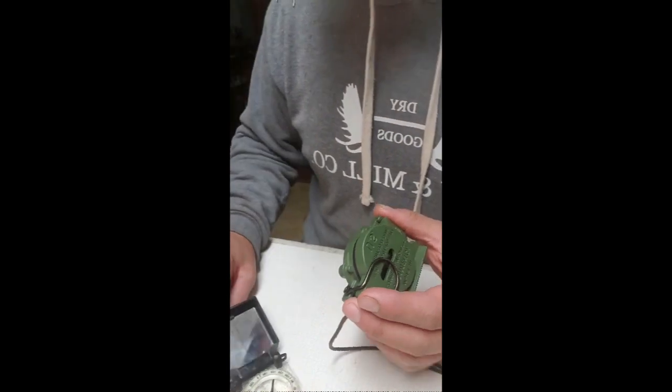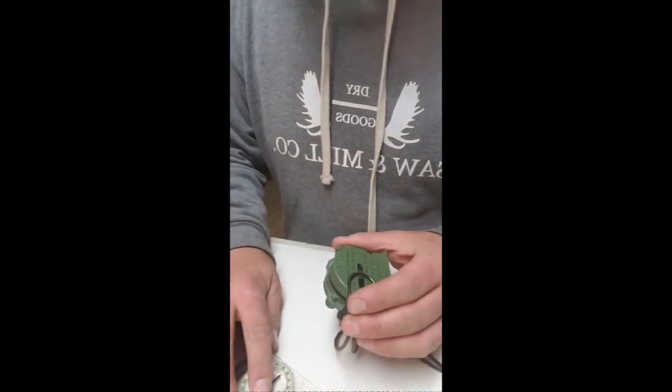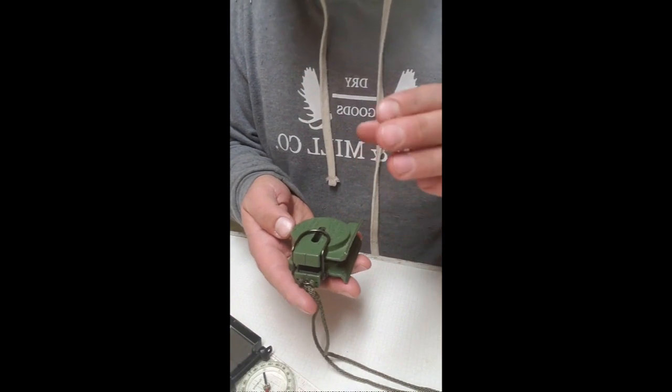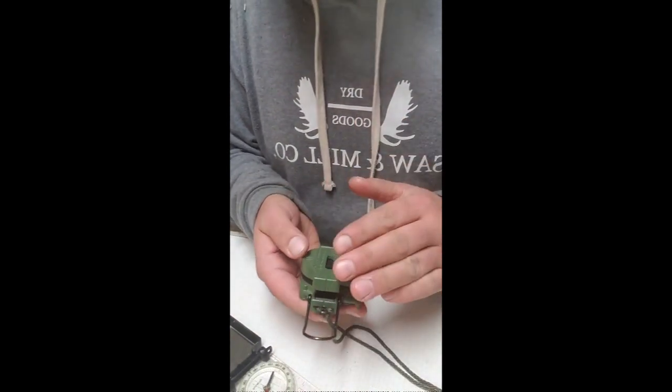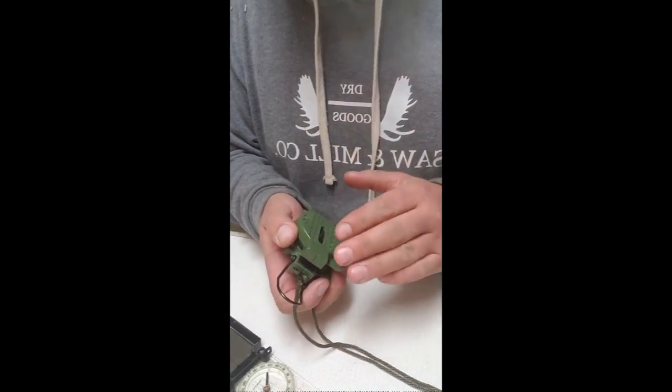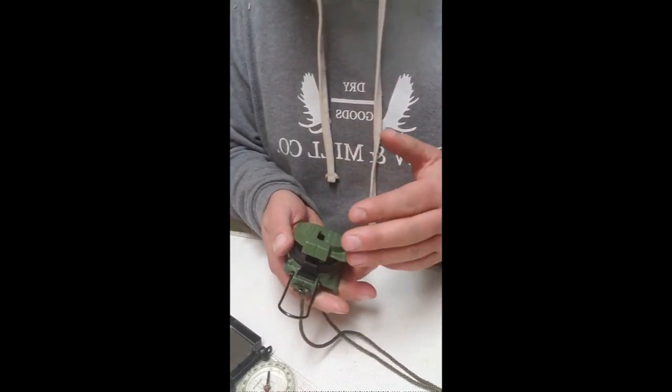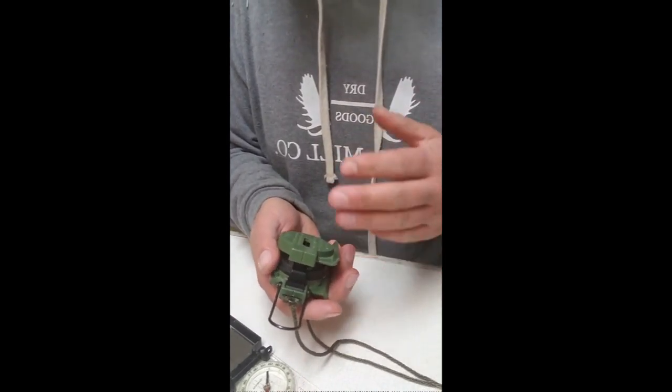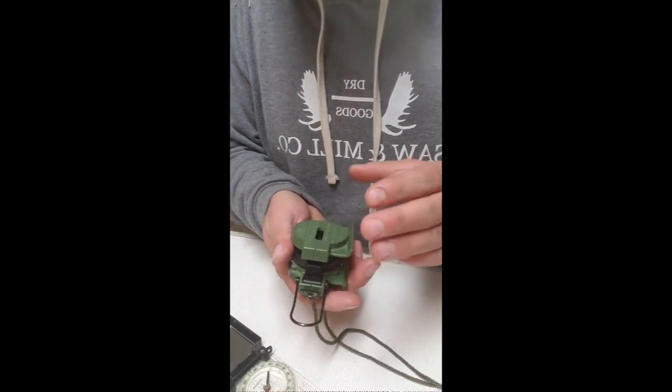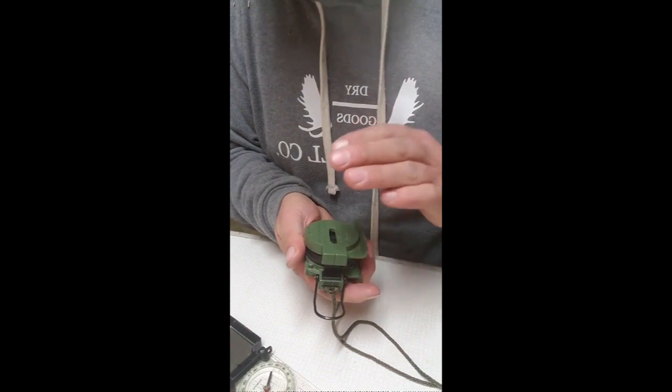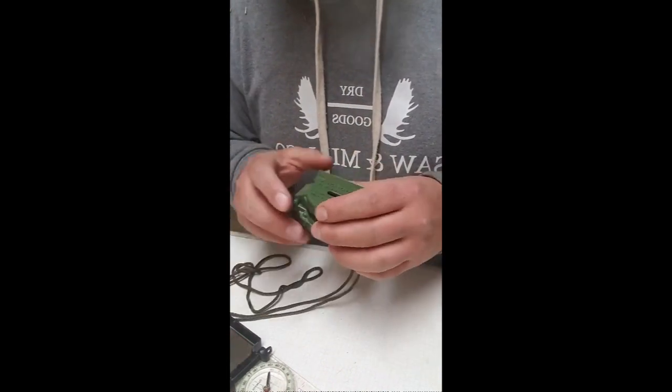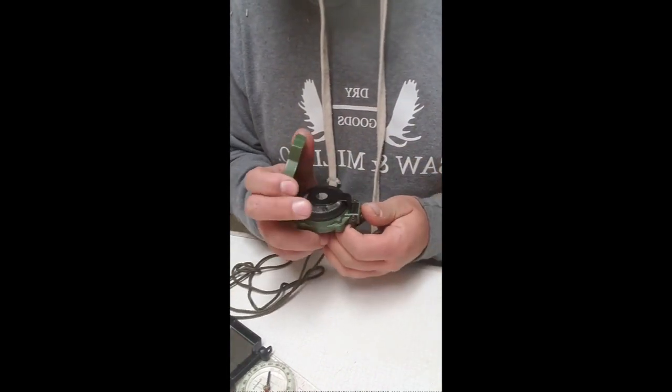The Lensatic compasses, you technically can't get, it is a global needle, but this style is the model. If you need the global needle for international travel, if you're traveling to South America, Australia, anywhere in the Southern Hemisphere, you're going to want the model 3HSH, and that's going to give you a compass that's balanced for the Southern Hemisphere.